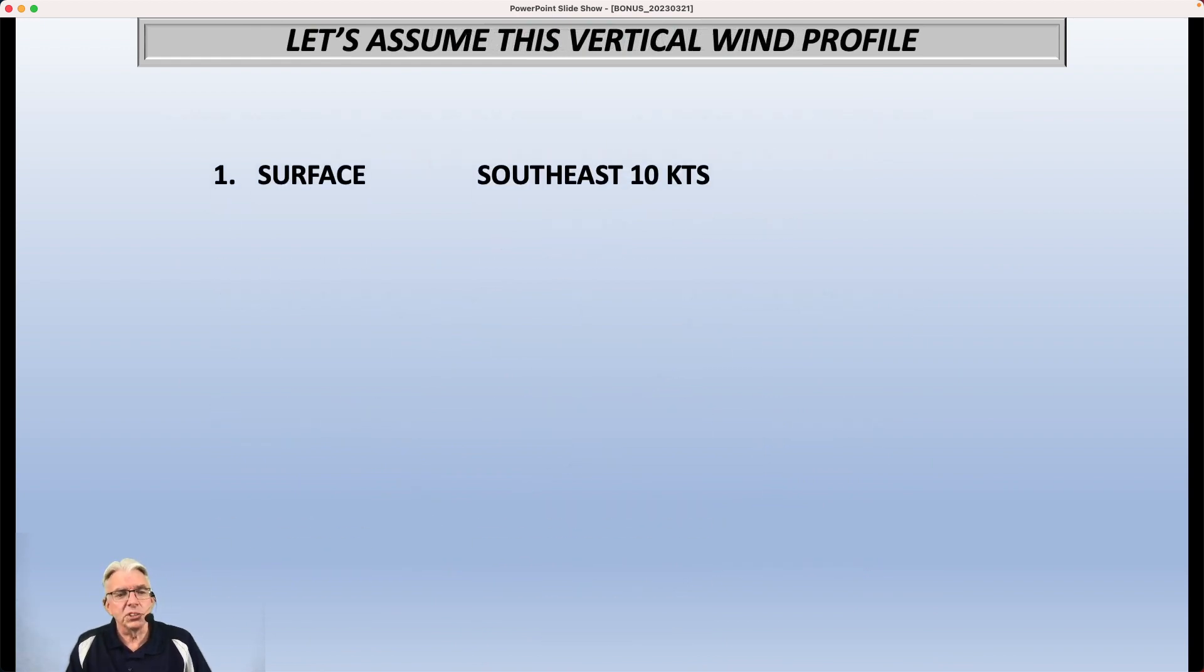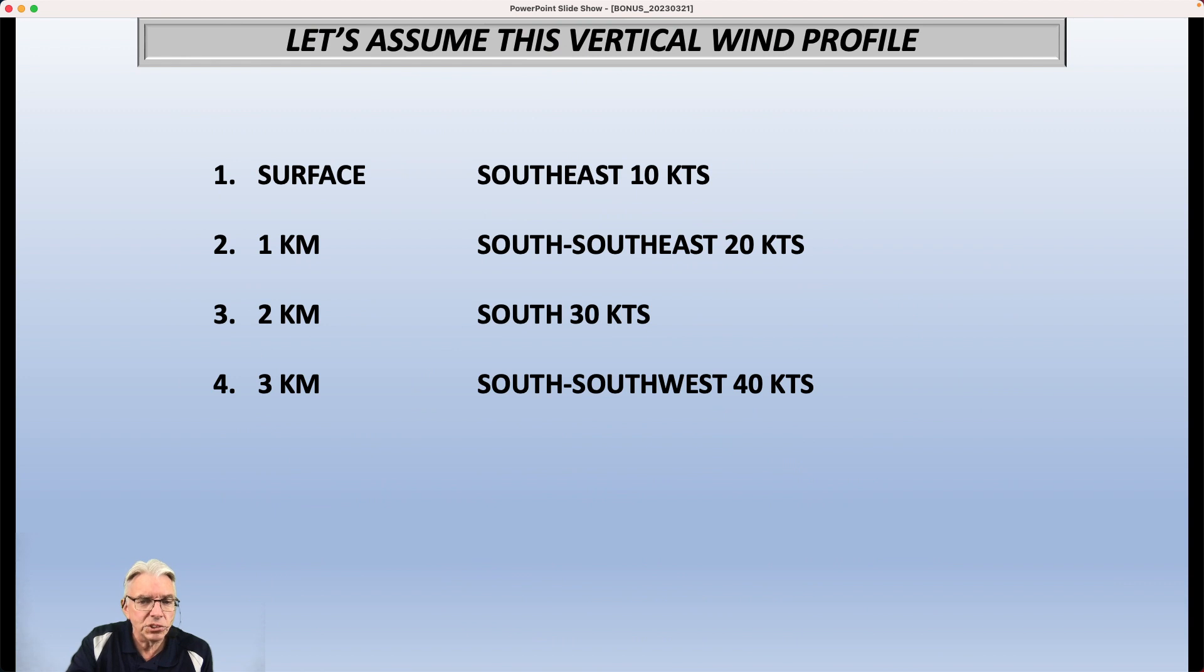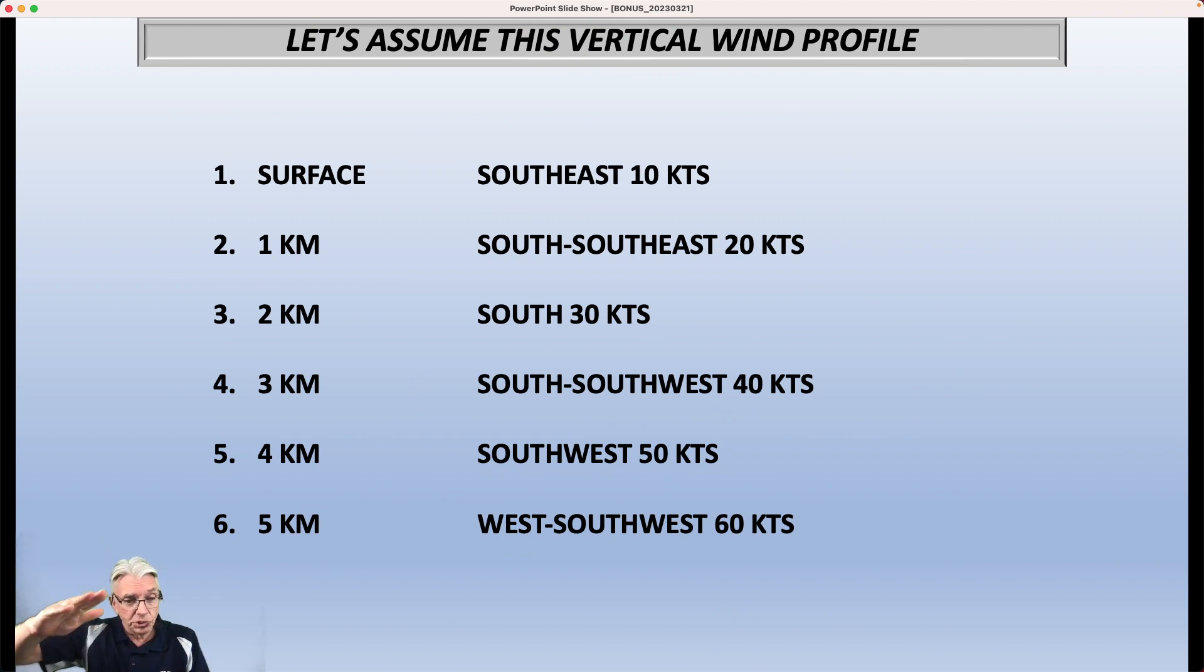So let's take a look at just a typical wind profile that we might see in a severe weather episode or potential episode. By the way, we usually use nautical miles, not knots and not miles per hour. At the surface, let's say we have a wind coming from the southeast at 10 knots. At one kilometer - everything in science is metric - we have a south-southeast wind at 20. At two kilometers south at 30, three kilometers south-southwest at 40, four kilometers southwest at 50. And finally, at five kilometers, we are west-southwest at 60. So what's happening here is that the wind is obviously increasing in speed as you go up, and it's also turning around like this, starting off in the southeast and turning around to the southwest.